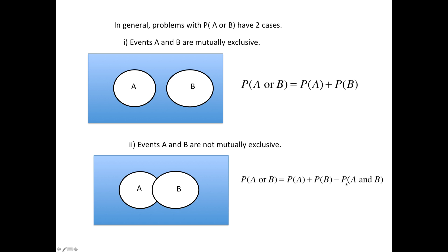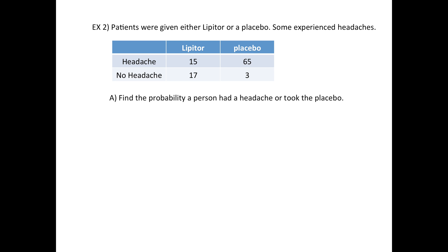Here's another example, not with playing cards, but here's a table where people were given the drug Lipitor, other people were given a placebo, and then some people experienced a headache and some people did not. Find the probability a person had a headache or they took a placebo. Again, the 'or' means we're going to add them together, but it's possible that somebody both had a headache and they took the placebo.